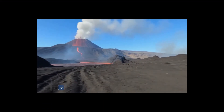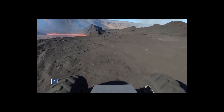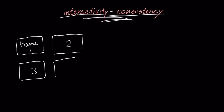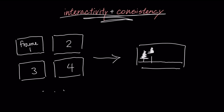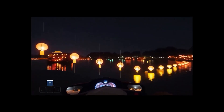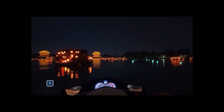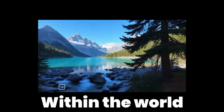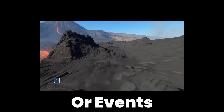Once this understanding is established, Genie 3 then begins the process of generating the visual world. The key here is real-time interactivity and consistency, which suggests the model isn't just generating frames independently, but is likely maintaining an internal representation of the world's state. As the user interacts with the generated environment, Genie 3 updates this internal state and renders the corresponding changes in real time.